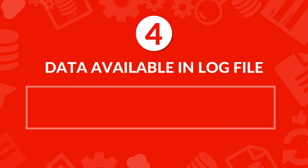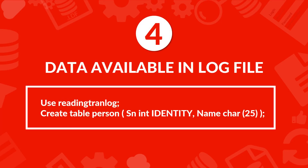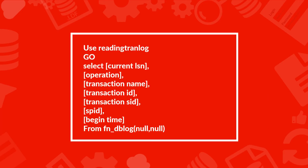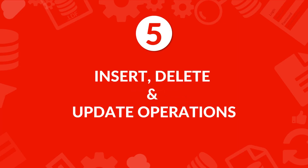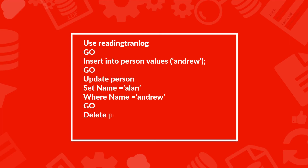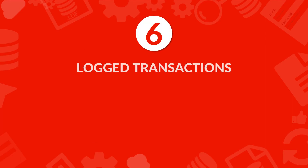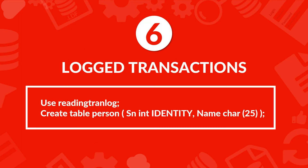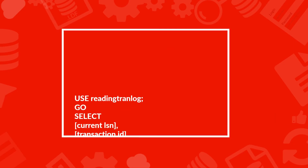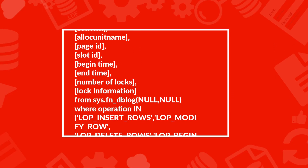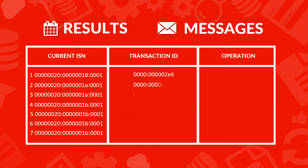Now in the fourth step, we will see what kind of data is available in the log file. In the fifth step, we will perform some insert, delete, and update operations to determine how these operations are logged in a transaction log file. The sixth step will show the logged transactions which we have performed. We can see in the above steps how the fn_dblog function shows the captured transaction logs and presents the transactions in human-readable format.